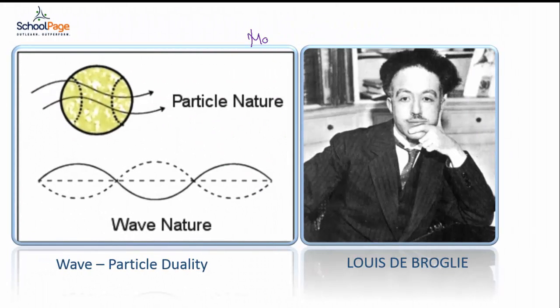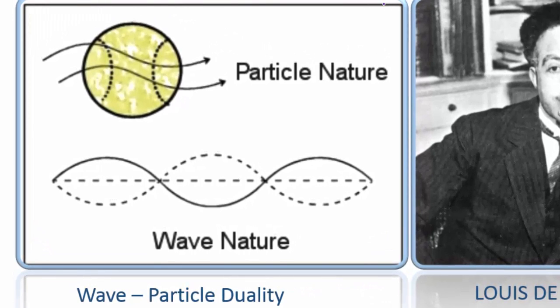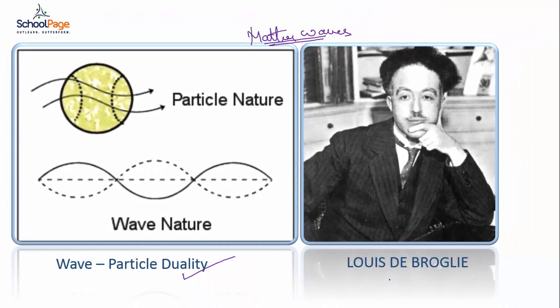Matter waves, also called de Broglie waves, are central to quantum mechanics and deal with wave-particle duality. This means fundamental particles of matter can exhibit wave-like behavior. This concept was given by Louis de Broglie, hence the name de Broglie waves.